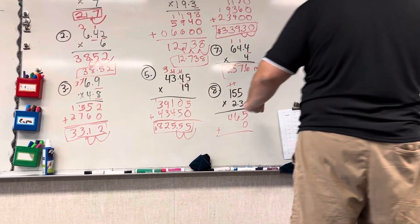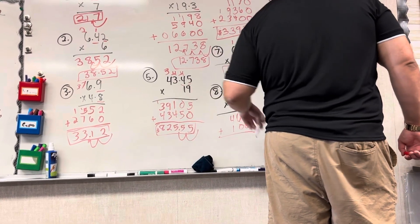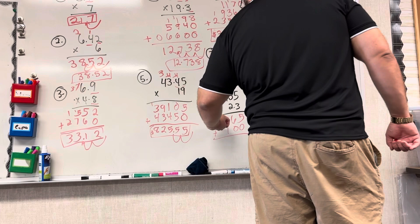Now we do the 2. 2 times 5 is 10, carry the 1. That makes it 11, carry the 1. 2 times 1 is 2, plus 1 is 3.